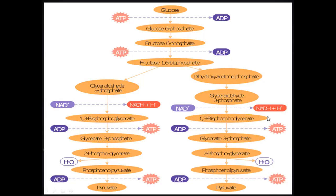Today we are going to discuss the number of ATPs produced in aerobic respiration and anaerobic respiration. First, we will discuss the difference between them. Aerobic respiration is the type of respiration that occurs in the presence of oxygen, and anaerobic respiration is the type of respiration that occurs in the absence of oxygen.